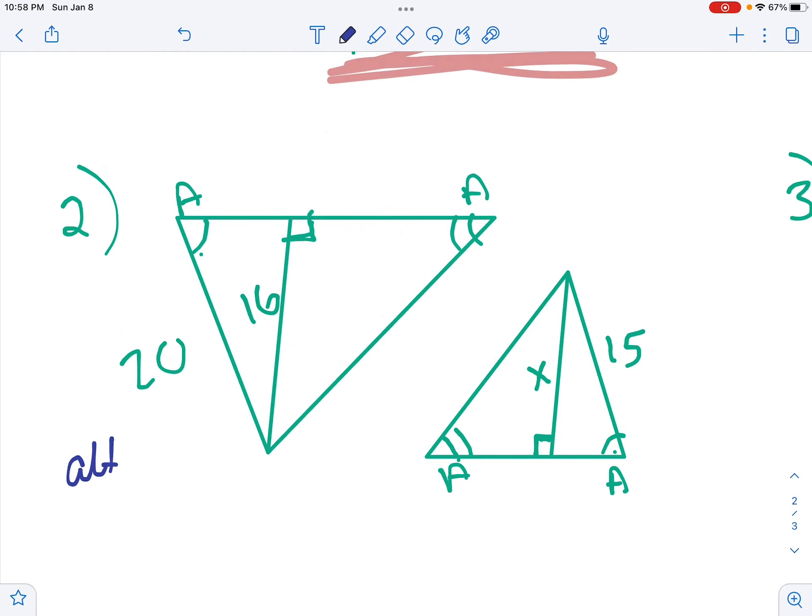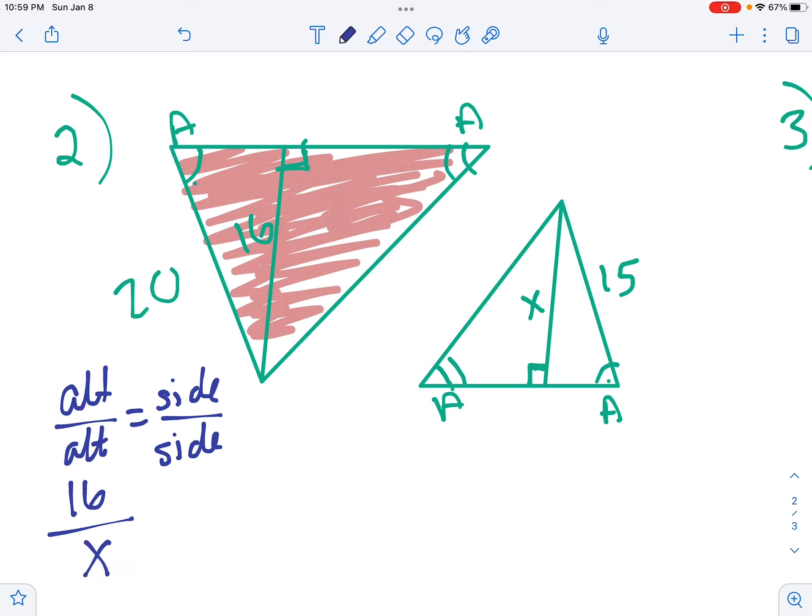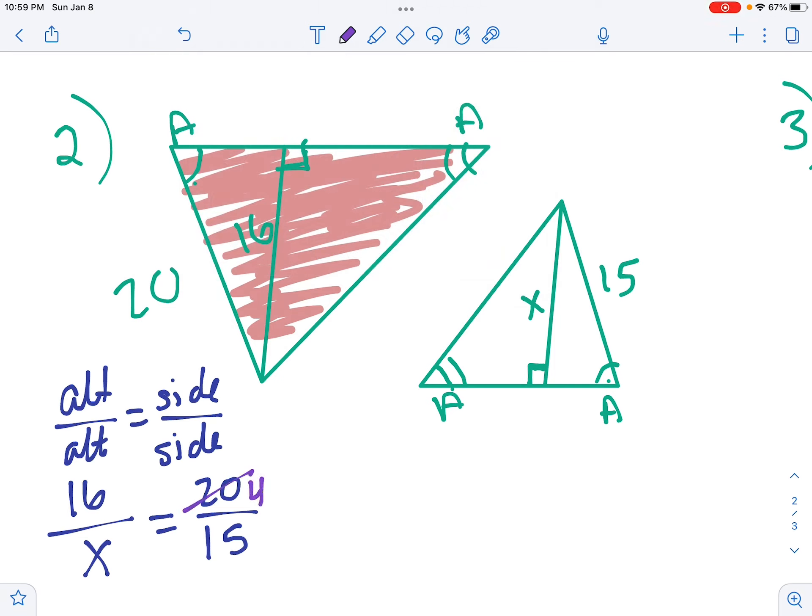So for this one, to set up our fractions, we're going to have altitude over altitude equals side over side. I'm going to put this red triangle on top, the bigger one on top of the fractions. So the altitude of that red triangle is 16. The altitude of the other triangle is X. Now I have to do the side of the first triangle, which the side it gives me is 20, over the side that I'm given on the littler triangle is 15. I like to simplify before I solve because it makes life a little easier. So I'm going to divide top and bottom by 5 to get 4 thirds. Now I can cross-multiply. 4 times X would be 4X. Now I'm going to go the other way and do 3 times 16 to get 48. Divide each side by 4 to get X equals 12. And that would be the altitude of your second triangle.